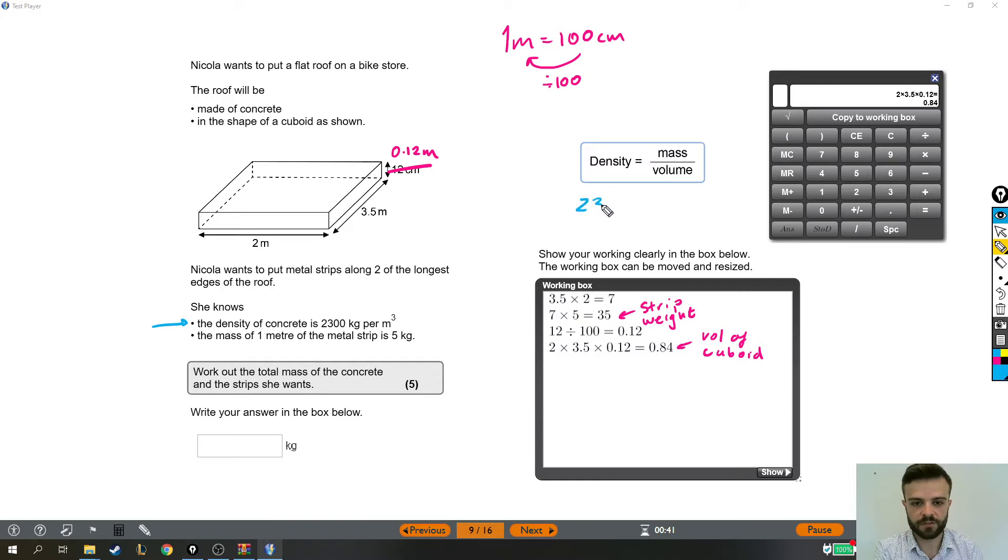Well, we know the density. It's 2300. We don't know the mass. We do know that the volume is what we just worked out. It's 0.84. So the mass divided by 0.84 is 2300. And the way we actually get mass from here, there are different ways of doing it, and it depends how you think on which way is going to make the most sense to you.